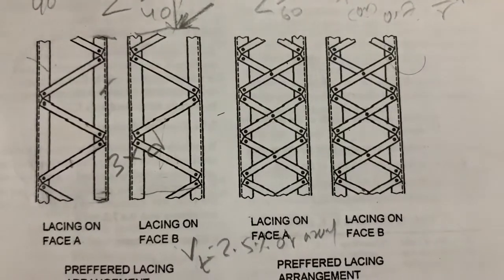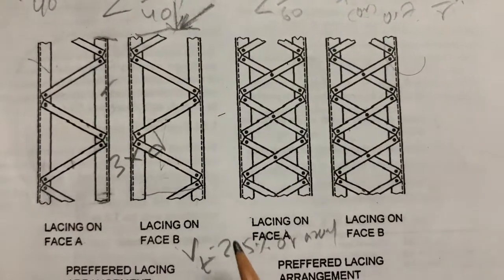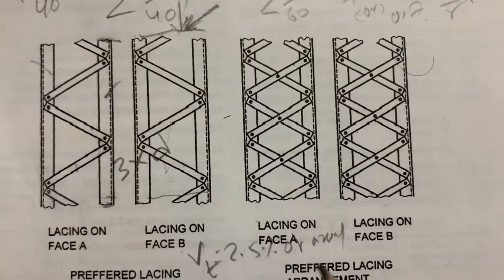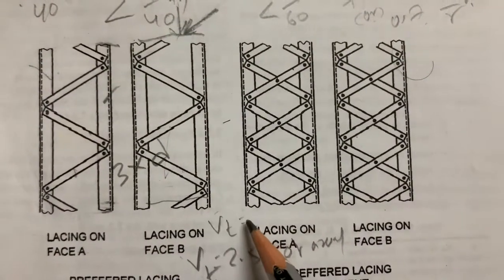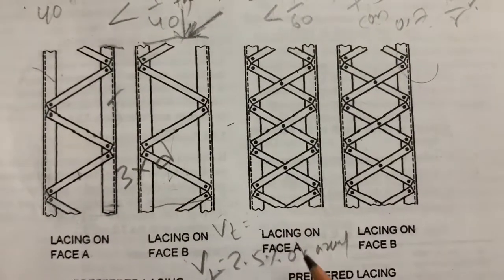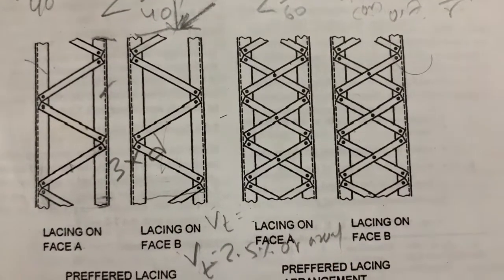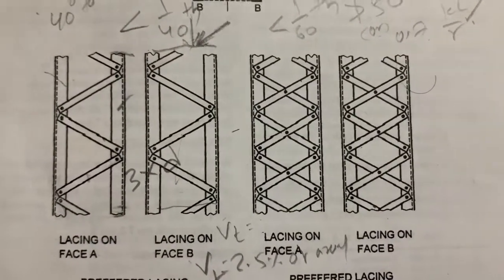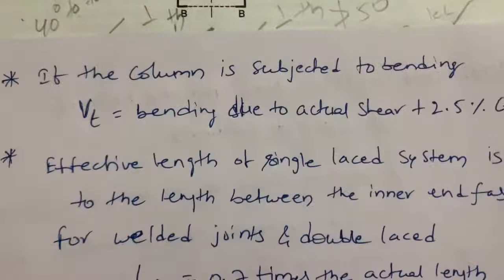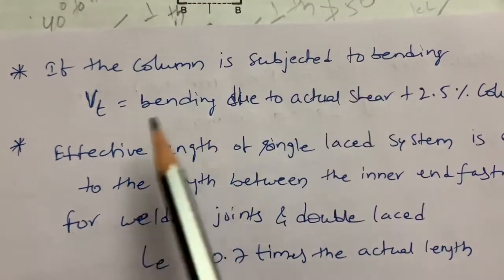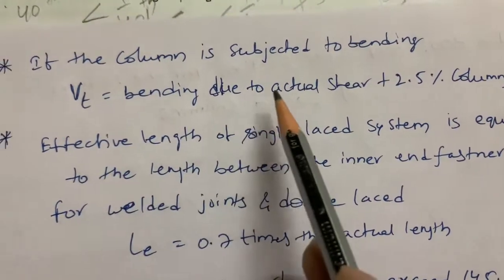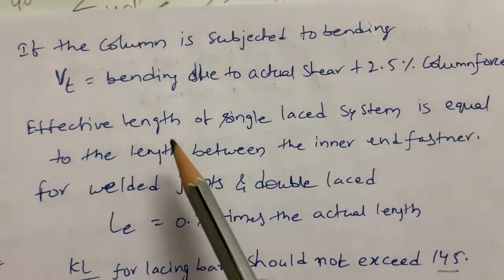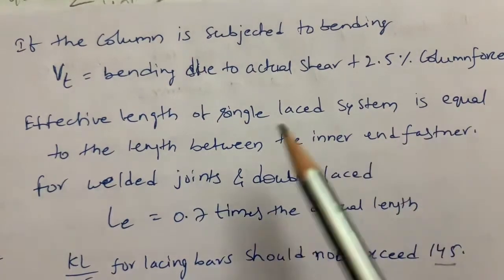In the case of bending, the transverse shear Vt should be taken as the shear due to actual bending plus 2.5 percent of the axial force. So if the column is subjected to bending, Vt equals actual shear plus 2.5 percent of the column axial force.